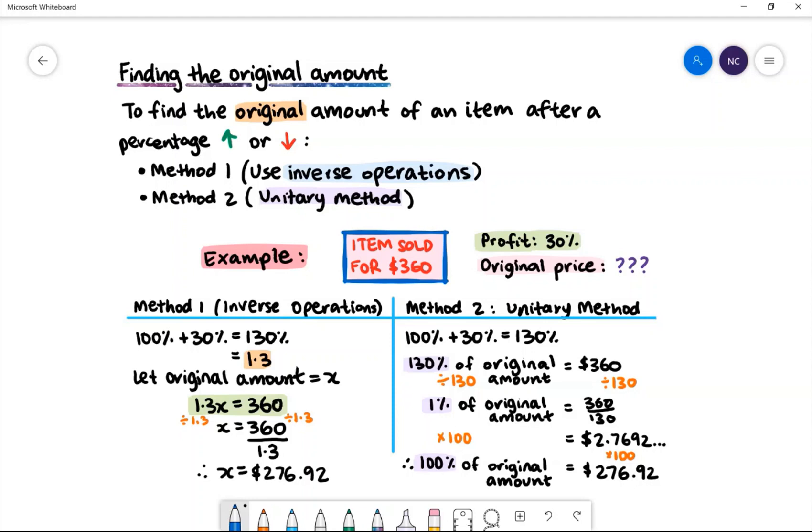We can set up a variable to represent the original amount of the item. So we let the original amount equal x. We know that 1.3 multiplied by x equals 360.